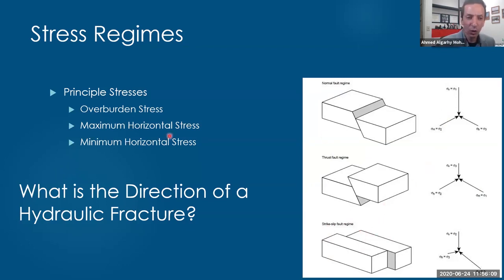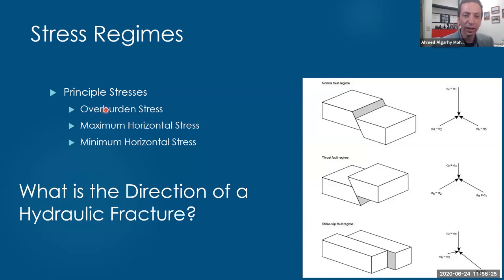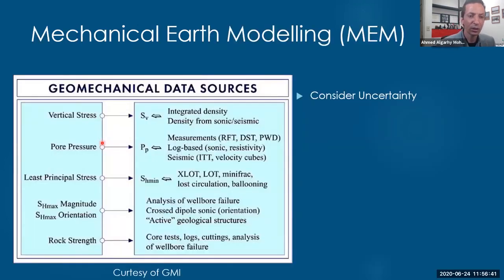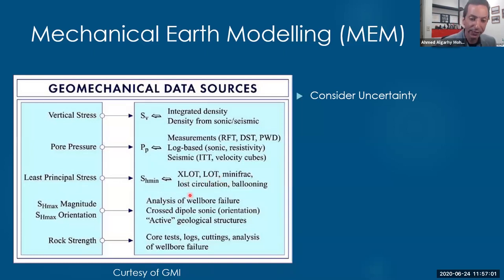For each one of these principal stresses, I need to get its magnitude and its direction. For the overburden, the direction is perpendicular, pointing to the center of the earth. The magnitude I can get by integrating the density log. For the pore pressure, I can measure it using DST or RFT. I can measure the least principal stress - the minimum horizontal stress - by doing a leak-off test, extended leak-off test, mini-frack, or micro-fracturing. There are many techniques to get that magnitude.